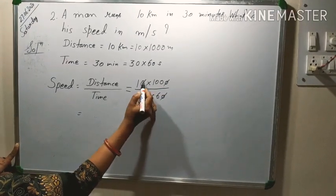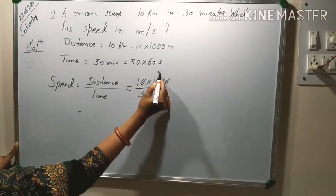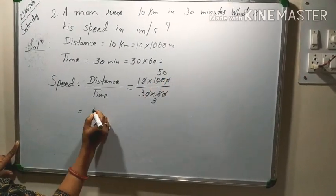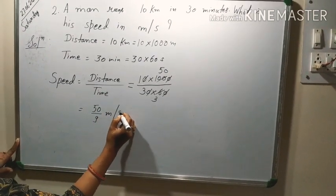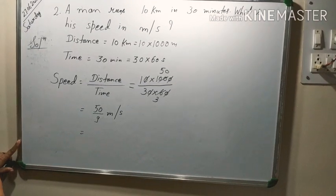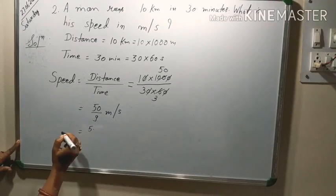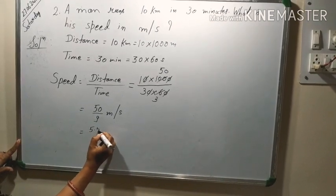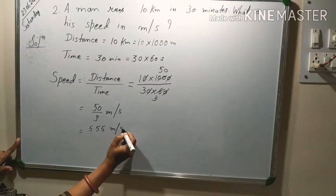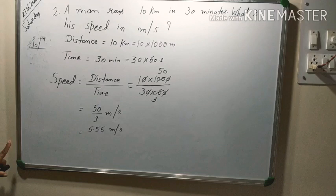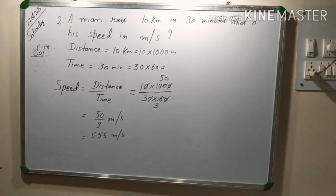This will be cancelled. So it is coming 50 by 9 meter per second. When we change it in decimal, we get 9 by 45, again 5 is remainder, 9 by 50, 5.55 meter per second.